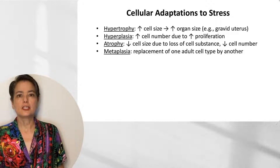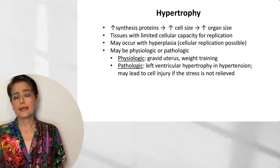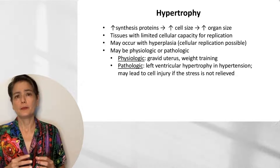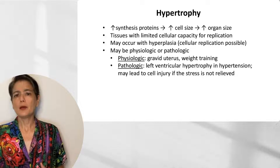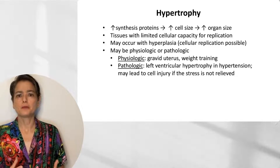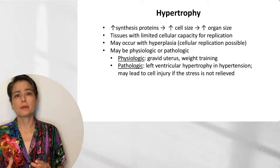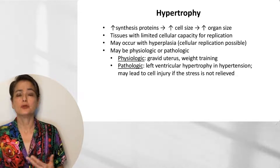Let's do a deep dive into each of these, beginning with hypertrophy. Hypertrophy is increased cell size, and this is due to increased synthesis of proteins. As you increase your protein synthesis, each cell will become larger. As each cell becomes larger, the organ becomes larger, and we can actually see this grossly. We see hypertrophy in cells that need to respond but have a limited cellular capacity for replication. By contrast, hyperplasia occurs in tissues where you can have cellular replication, but hypertrophy and hyperplasia may occur in the same tissue simultaneously.